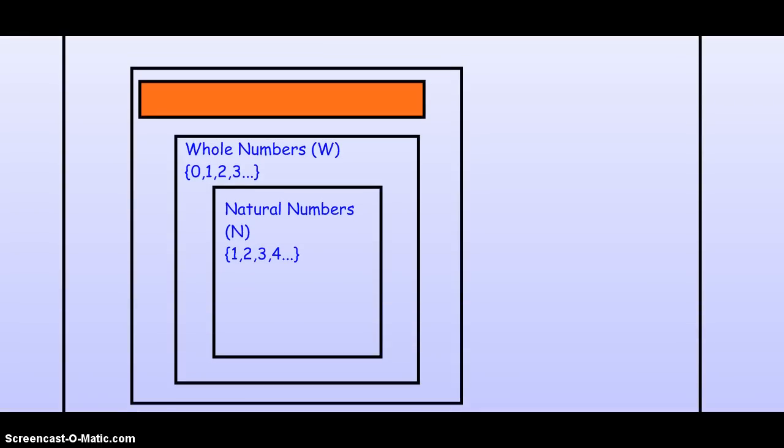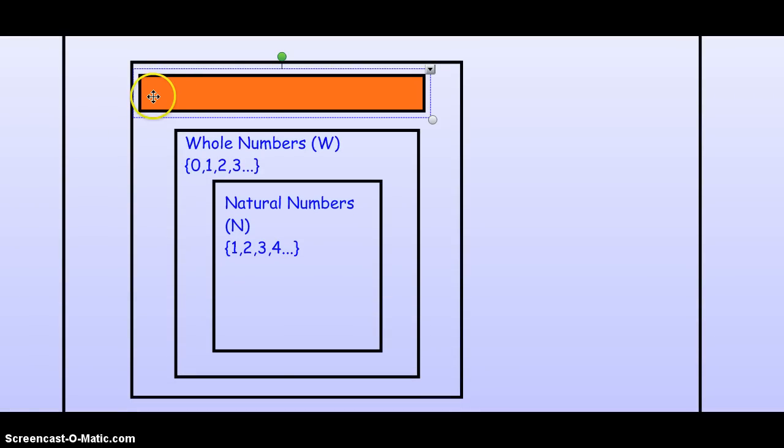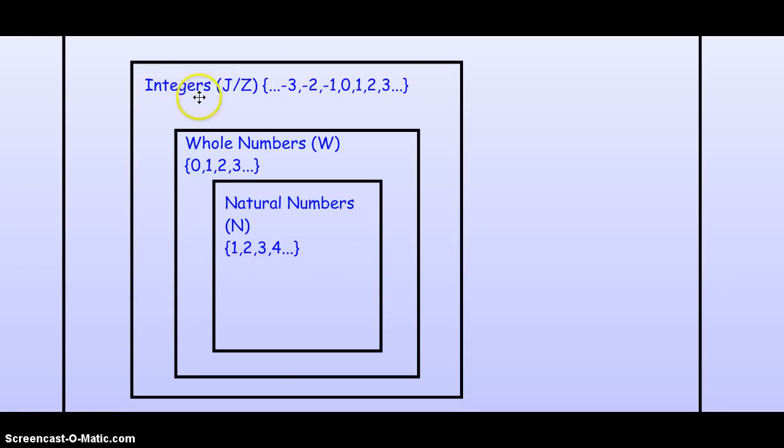Then we go to the next largest one. This set is called the integers. And this is abbreviated with either a capital J or a capital Z. Both will work.